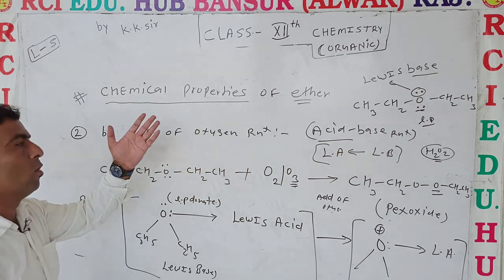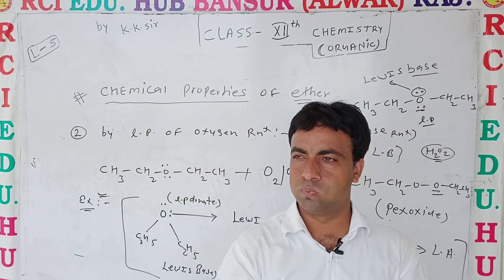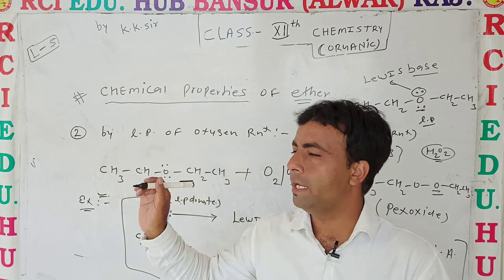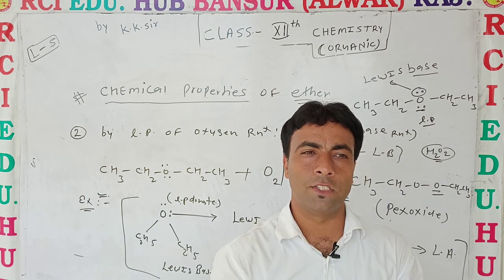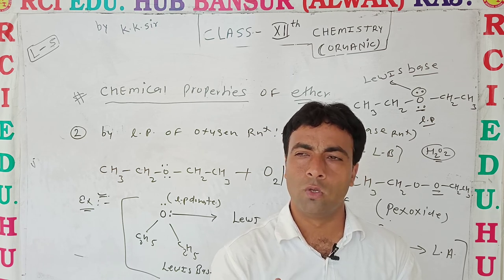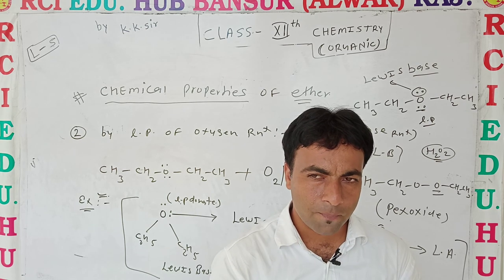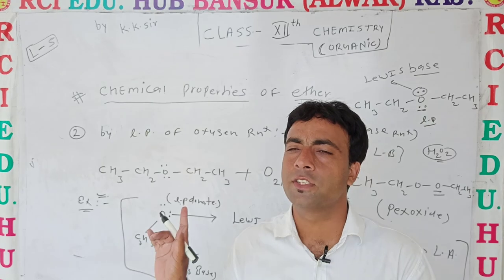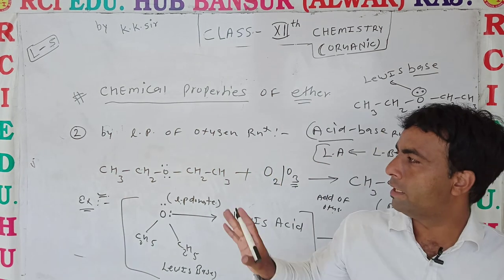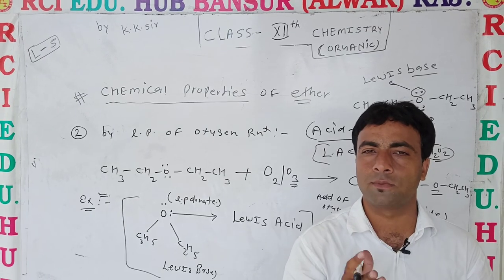These are the chemical properties of ether, mostly useful for forming different types of chemical products. The two main reactions in the chemical properties of ether are: first, Williamson ether synthesis, and second, the GCS method. These involve lone pair oxygen reactions and substitution reactions.